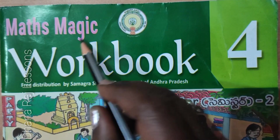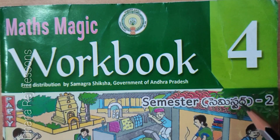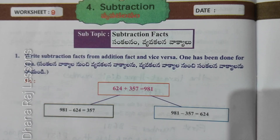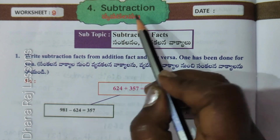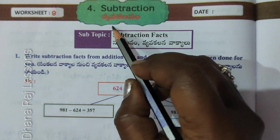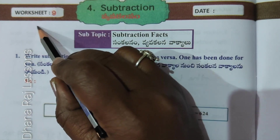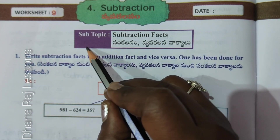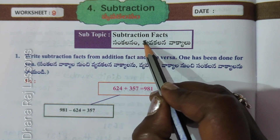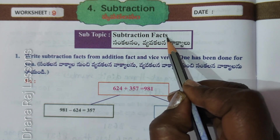Fourth Class, Math Magic Workbook, Semester 2, Fourth Unit, Subtraction. Vyavakalna Worksheet 9. Subtopic: Subtraction Facts.